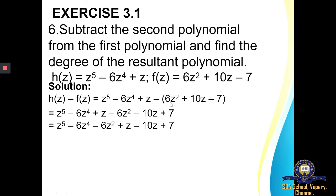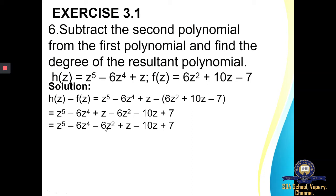Let us rearrange with the like terms together. Z power 5 — do you have any other term with power 5? No, so just write Z power 5 as it is. Z power 4 — no other term, so write minus 6Z power 4 as it is. Z square — no other term, so write minus 6Z square as it is. Then you do have a term with Z: plus Z then minus 10Z. The constant is written as it is. Now since there is a difference of sign for the Z terms, subtract and put the greater number sign: Z minus 10Z gives minus 9Z.